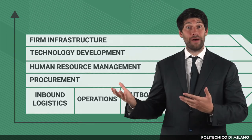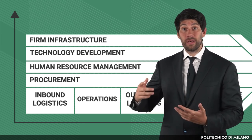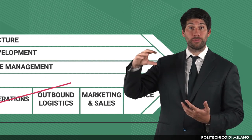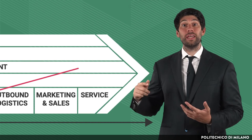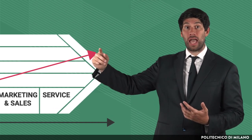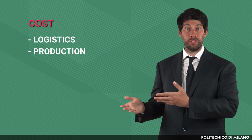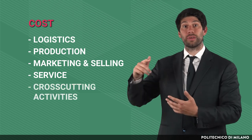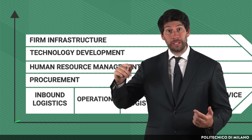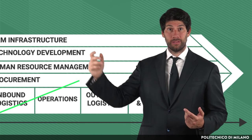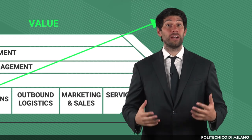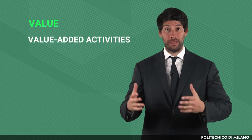Through the graph, we can underline the fact that as the input goes through the different activities — starting from the cost of buying raw materials — it increasingly includes a growing set of costs: logistic, production, marketing and selling costs, serving costs, and costs linked to cross-cutting activities. At the same time, activities play a role in increasing the value of the input. Activities have a role in creating value and are therefore called value-added activities.